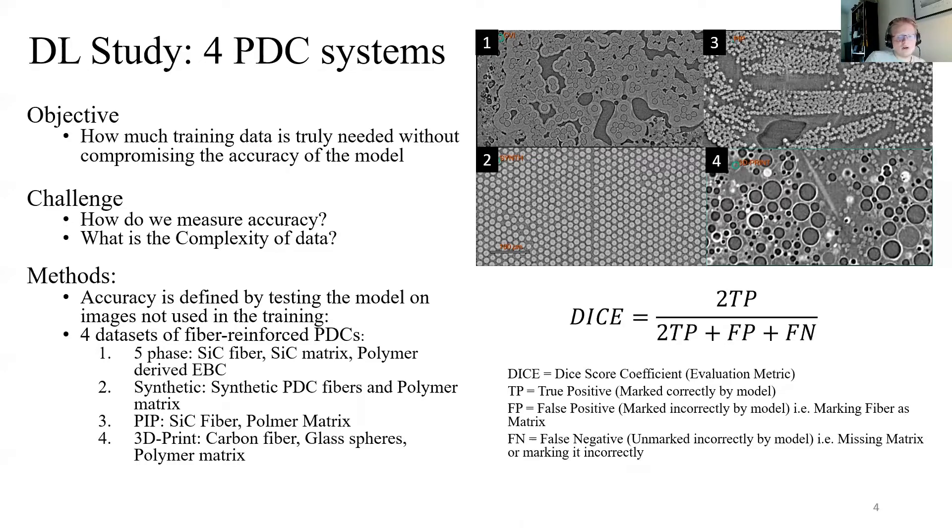The four we selected are, in order of the graphic in the top right corner: one, the five-phase EBC-coated PDC. This is a sample that was used previously in some of Ali's research. Number two is a synthetic PDC. Three is the PIP datasets that were provided by Natalie Larson. Four is a 3D-printed carbon fiber-reinforced PDC with glass spheres inside of it.